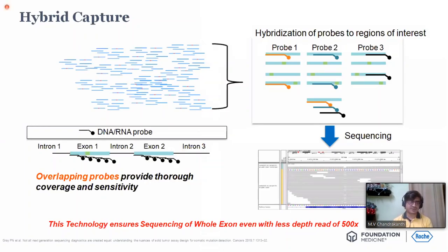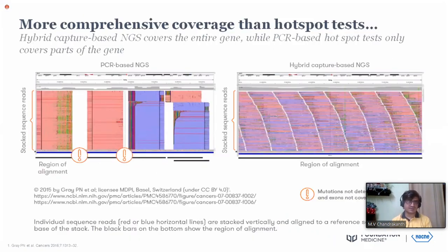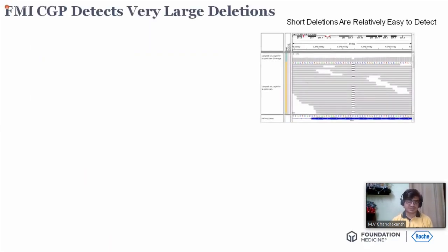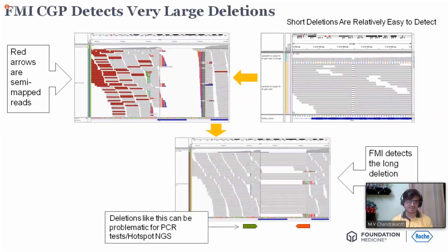This is the hybrid capture approach — overlapping probes provide thorough coverage and sensitivity of more than 95% across multiple genes, and more comprehensive coverage than hotspot testing because you are looking at the gene in its entirety. PCR-based NGS only targets specific areas and doesn't pick up large deletions, whereas hybrid capture NGS picks up minor mutations and also large deletions. This is an example of how a large deletion can be missed by a hotspot and is promptly picked up by FMI — that's why sometimes we see an exon 19 deletion not detected locally but found when sent to FMI.